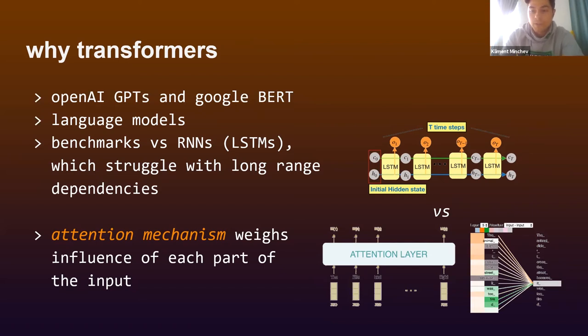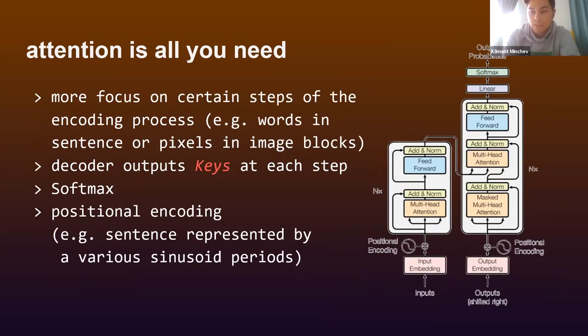Transformers use something called the attention mechanism, which we'll explain in detail, to weigh the influence of different parts of the input. The seminal paper is called 'Attention is All You Need.' Attention is a mechanism where the decoder can go back and look at particular parts of the input, unlike RNNs. Close attention is paid to certain steps of the encoding process, like certain keywords in a sentence or certain objects in image blocks, which we'll demonstrate.